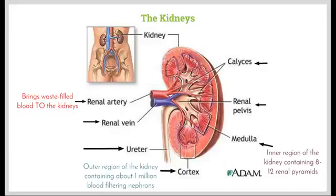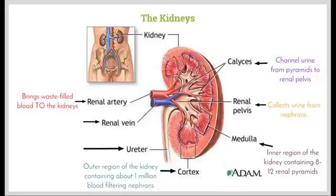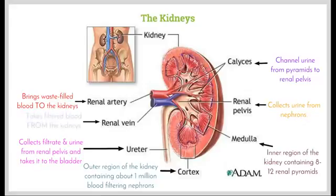We can see those triangle-shaped structures — they're the different renal pyramids. We then have the calyces, which channel the urine from the pyramids to the renal pelvis. The job of the renal pelvis is to collect the urine from the nephrons. We then have the ureter, which carries the filtrate and urine from the renal pelvis to the bladder for storage until it's eliminated. And lastly, the renal vein, which takes the filtered blood — which no longer contains nitrogenous wastes — back to the rest of the body.